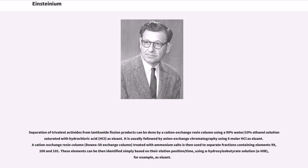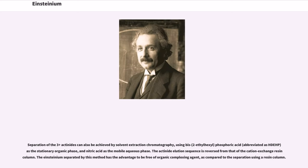A cation exchange resin column, Dowex-50 exchange column, treated with ammonium salts is then used to separate fractions containing elements 99, 100 and 101. These elements can be then identified simply based on their elution position/time, using alpha-hydroxyisobutyrate solution (alpha-HIB), for example, as eluent. Separation of the 3+ actinides can also be achieved by solvent extraction chromatography, using bis(2-ethylhexyl) phosphoric acid (abbreviated as HDEHP) as the stationary organic phase, and nitric acid as the mobile aqueous phase. The actinide elution sequence is reversed from that of the cation exchange resin column. The Einsteinium separated by this method has the advantage to be free of organic complexing agent, as compared to the separation using a resin column.